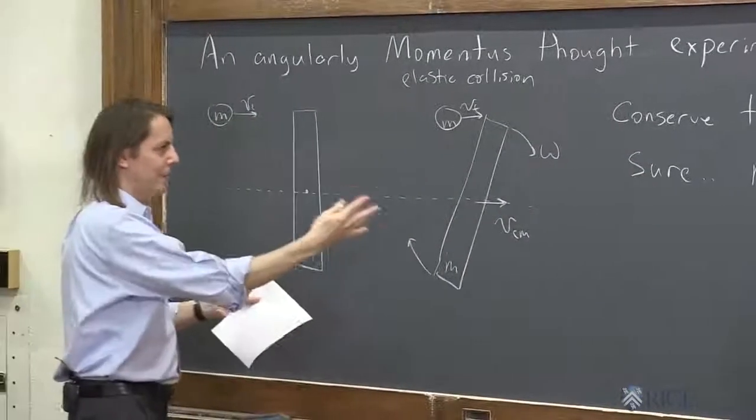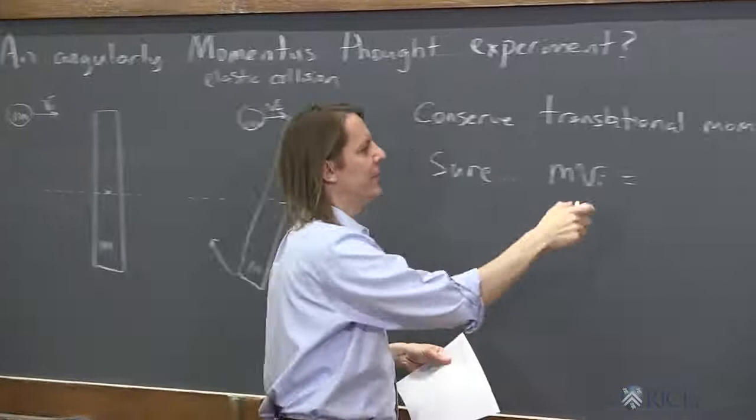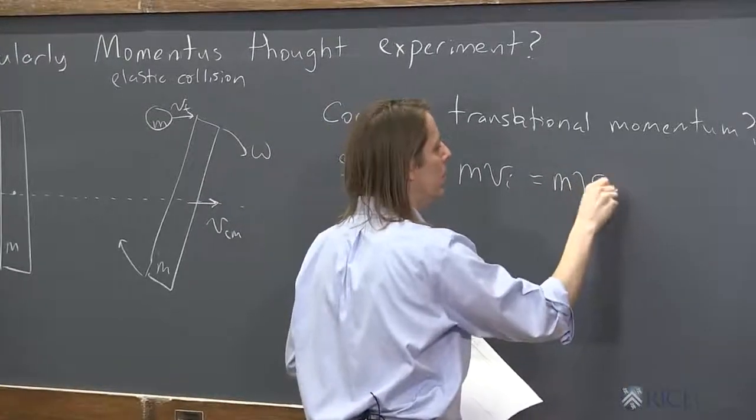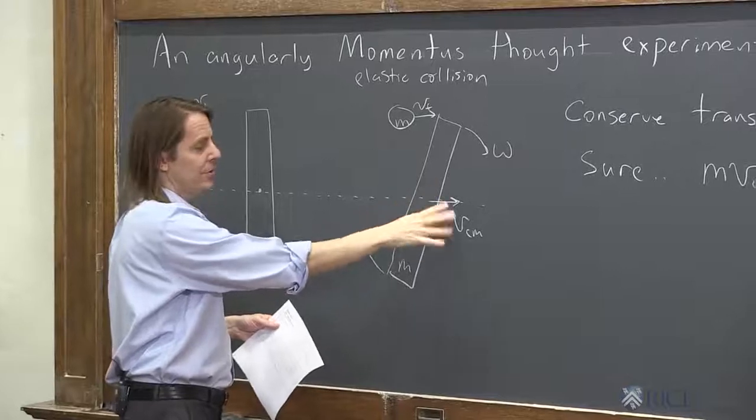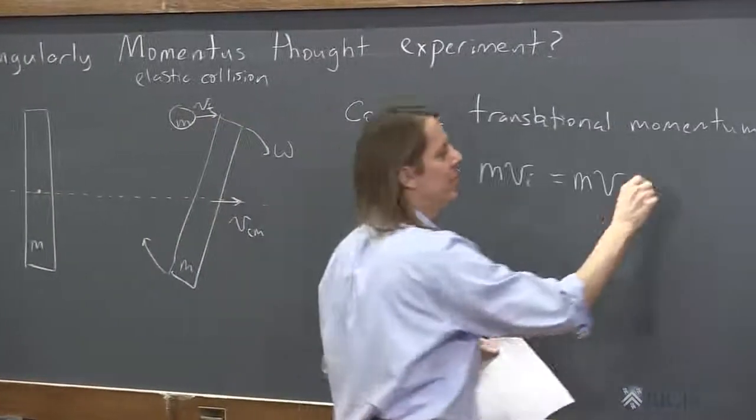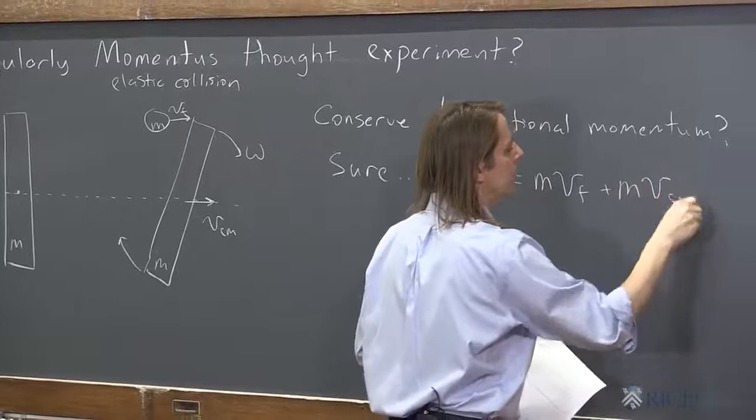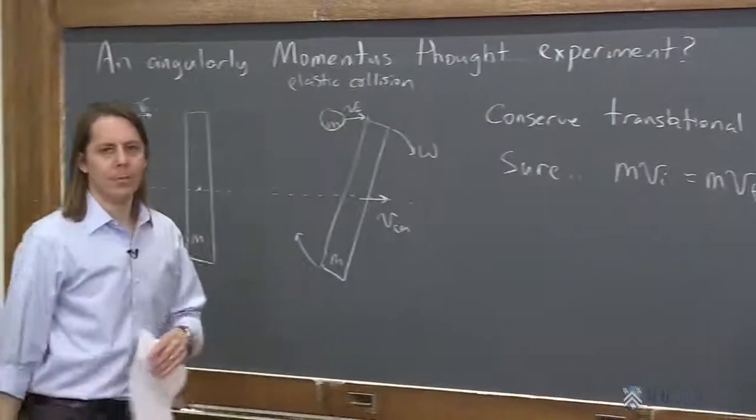And in the final state, we have the mass going at velocity final, plus that same amount of mass is the bar moving at the center of mass velocity. No problem.